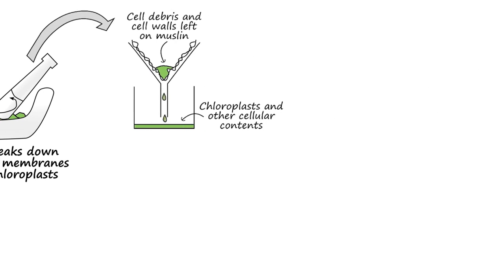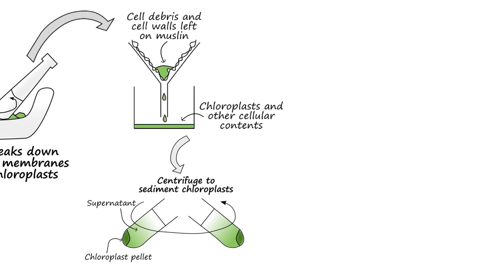Once we've ground it, we'll then filter out the cell wall debris using some muslin and then centrifuge the extract at 3,000 revolutions per minute for five minutes. Centripetal forces mean that the denser components of the cell, including the chloroplasts, will collect in a pellet at the bottom of the centrifuge tube. After centrifuging, we'll pour the supernatant away and re-suspend the pellet to get a nice chloroplast extract.